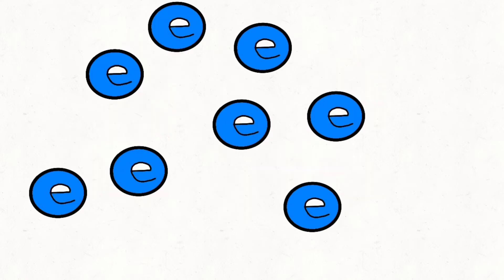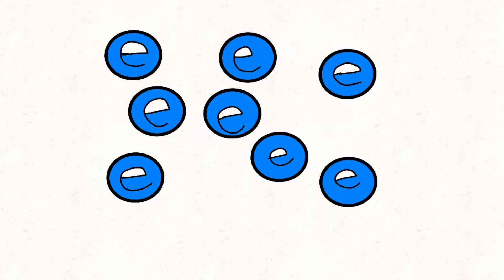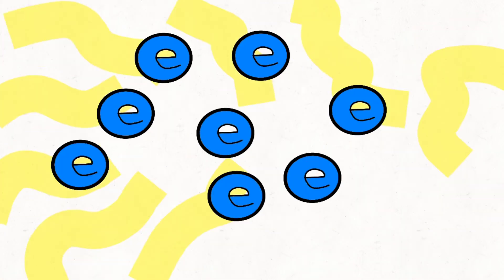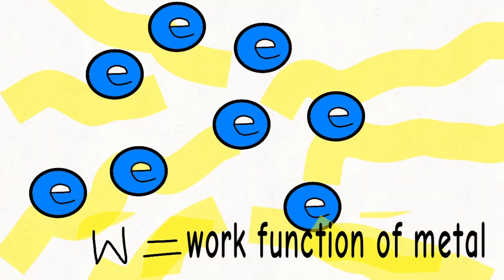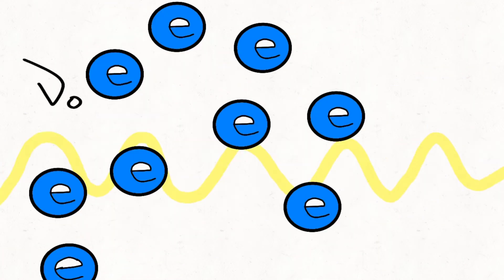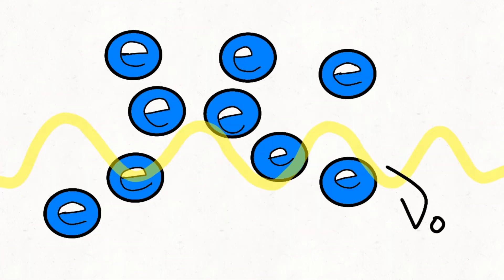Every metal has free electrons that move from one atom to another. The minimum energy required to free the electron from the metal surface is called the work function of that metal.